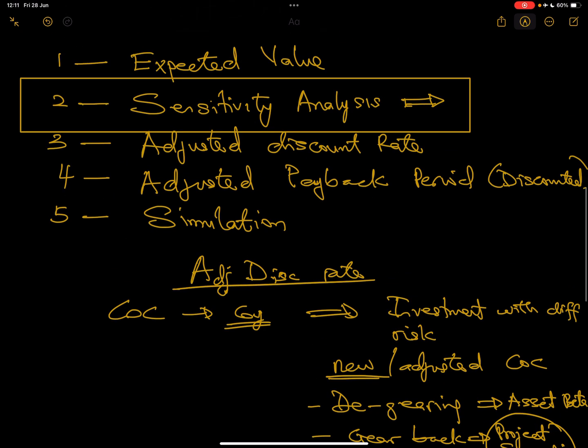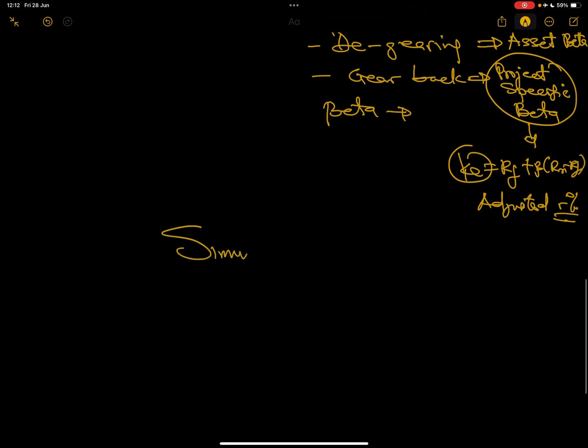That's adjusted discount rate. For adjusted payback method, we've dealt with that in one of the videos. I told you you have to discount your cash flows to get the present value before you calculate the payback. For simulation, this can also be tested but most likely just in theory. That's just a way of predicting the future. There are different techniques you can use, but usually you use computer-based techniques. It's not done manually.